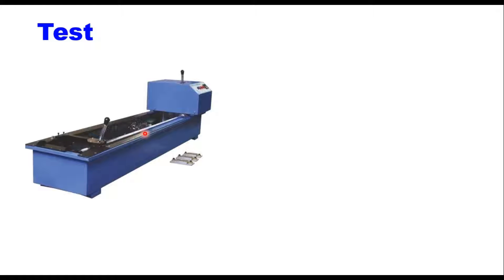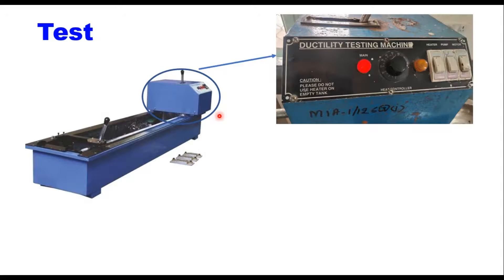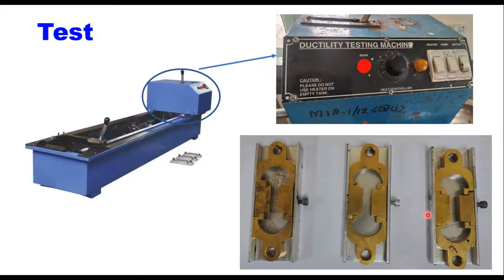Here you can see the machine. If you look closely, there are three buttons: heater, pump, and motor. The heater maintains the temperature of the bath at 15 degrees Celsius. The pump circulates the water so that the temperature is uniform throughout. When you start the motor and release this gear, this part of the machine starts moving to this side and stretches the sample. These are the three molds used for elastic recovery. That is the equipment required.